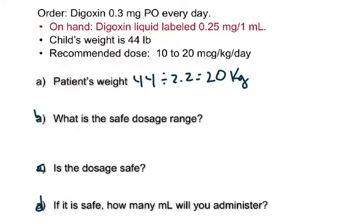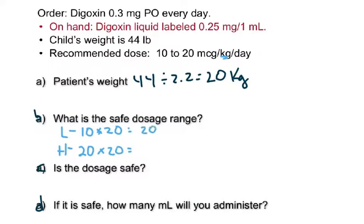For his safe dose range, I do a low and a high. His low is 10 and his high is 20. Multiply each by his weight of 20 kilograms. The low gives 200 and the high gives 400. The units are micrograms per day — so his safe dosage range is 200 to 400 micrograms per day.